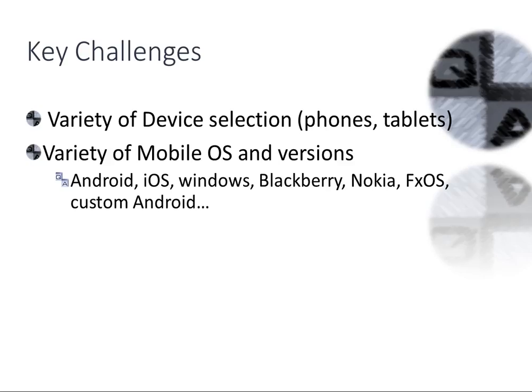Another challenge is operating systems and their versions. Android is up to the letter H — six or seven versions. iOS has eight of them. Windows, Blackberry, Nokia, Firefox OS, custom Android — Amazon does custom Android. Every operating system and varied version has different APIs and different function calls that could potentially break your application. In addition to physical devices, you have operating systems that change.